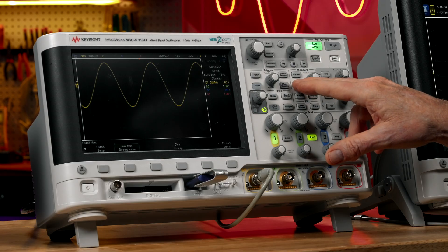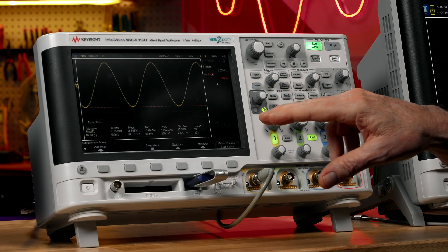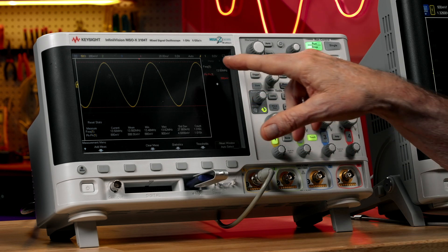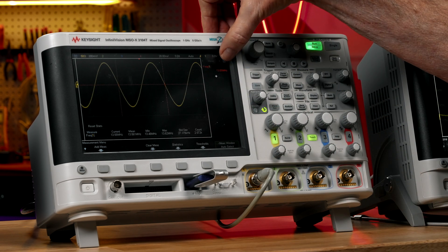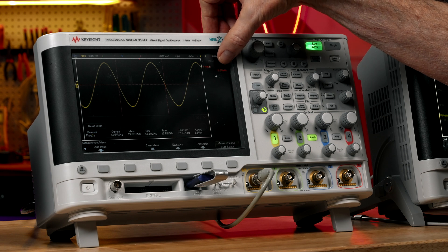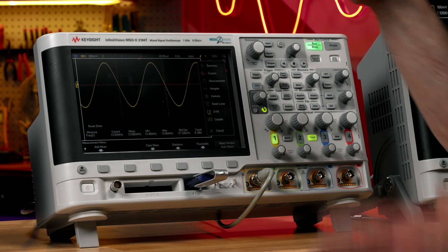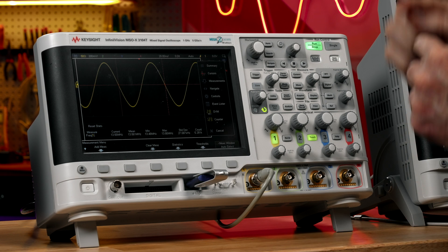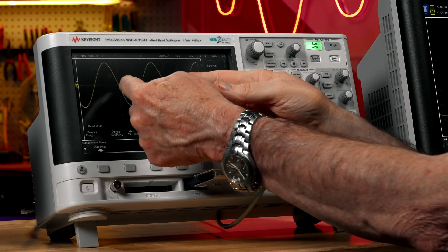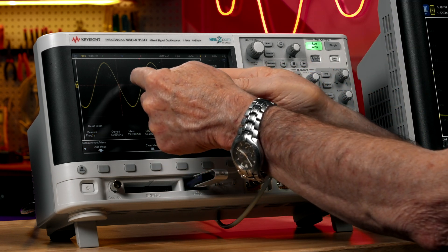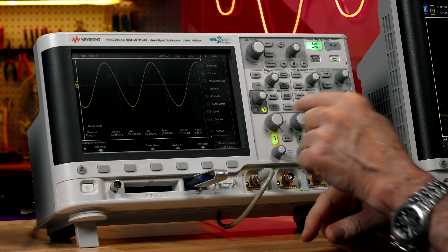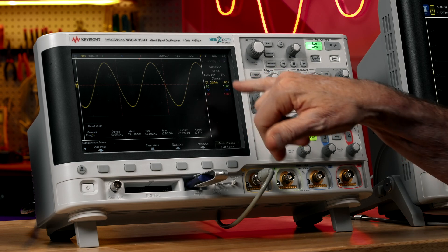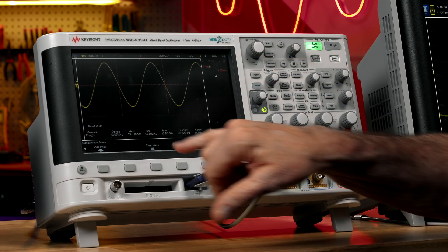I'm going to select the frequency measurement that's based on the digitized waveform. And it's measuring right now, it says about 13.5 something. It's flipping back and forth. What it's doing is measuring the period of just one cycle, taking the reciprocal to come up with the measurement results. And we can see the statistics.